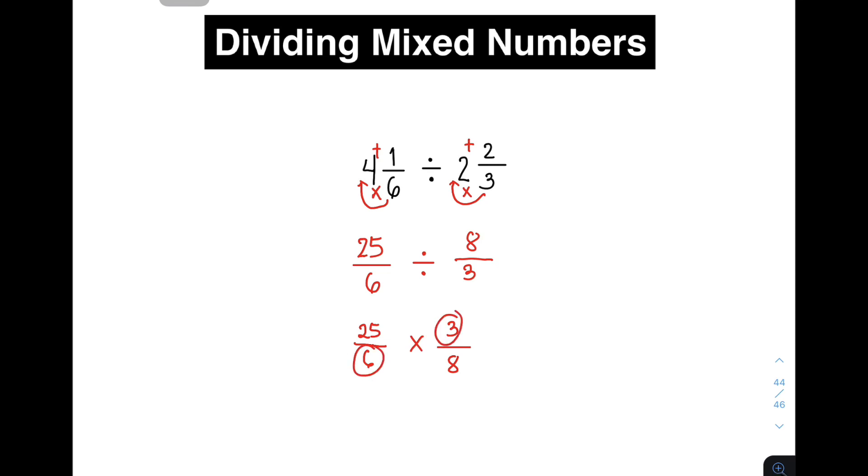These two numbers are both divisible or meron silang factor na 3. Meaning, we can cancel out this one. Cancel natin, meron tayong 1. At ito yung cancel natin, meron tayong 2. Kasi meron tayong isang 3 sa 3 at meron tayong dalawang 3 sa 6.